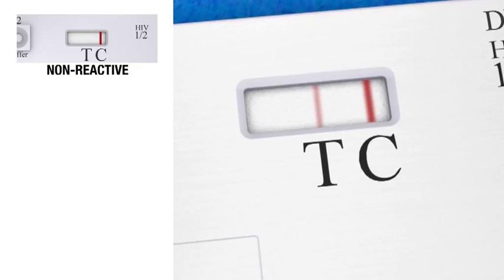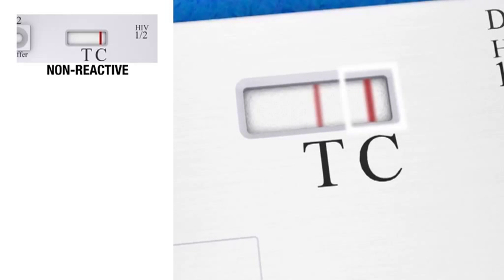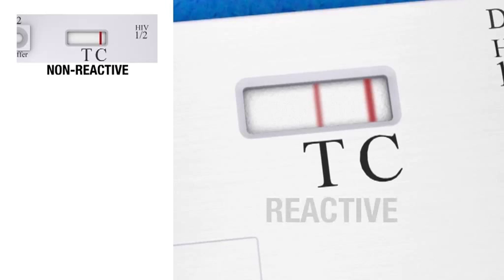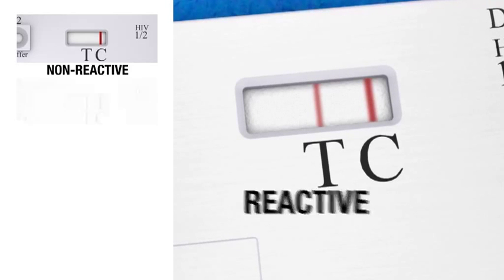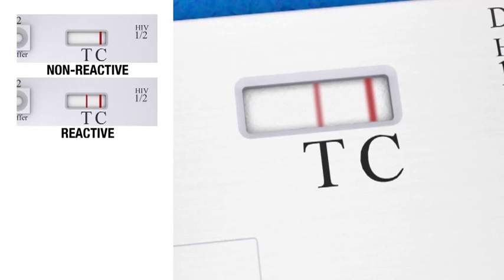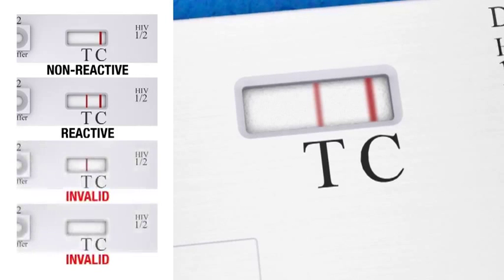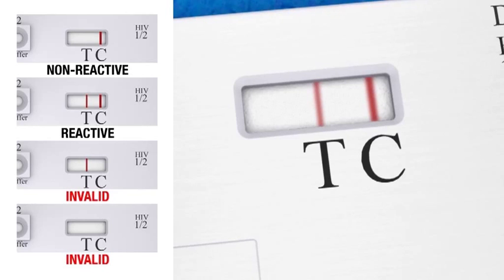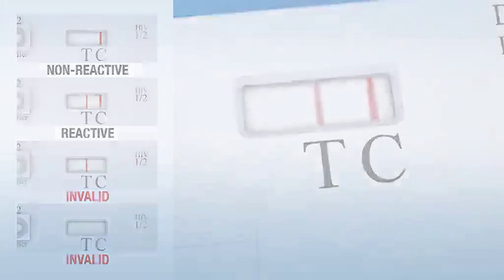If a reddish line is visible above the T marking and a line is visible above the C marking in the test window, then the result is reactive, meaning that the patient is preliminarily positive for HIV-1 and or HIV-2 antibodies. The results must then be confirmed by a more accurate method.